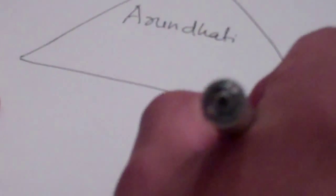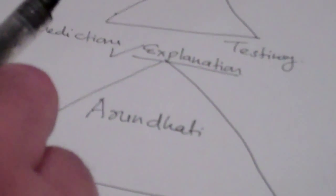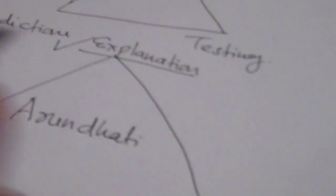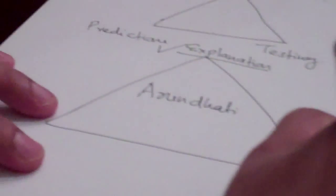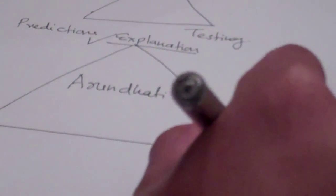One way is we can use astronomy software to test for this scenario going back in the past and to find out if at any point, if at all, Arundhati walked ahead of Vasishtha.